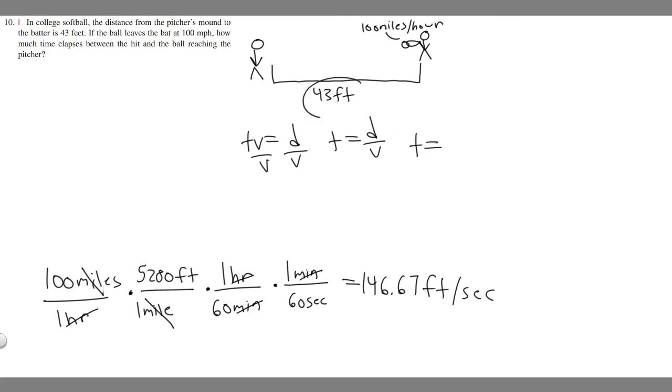So T is going to equal our distance in feet, so 43 feet divided by the velocity 146.67. You can estimate if you want on that. I'm just going to do this number though. And if you notice, the feet will cancel essentially, and you're just going to have it in seconds.